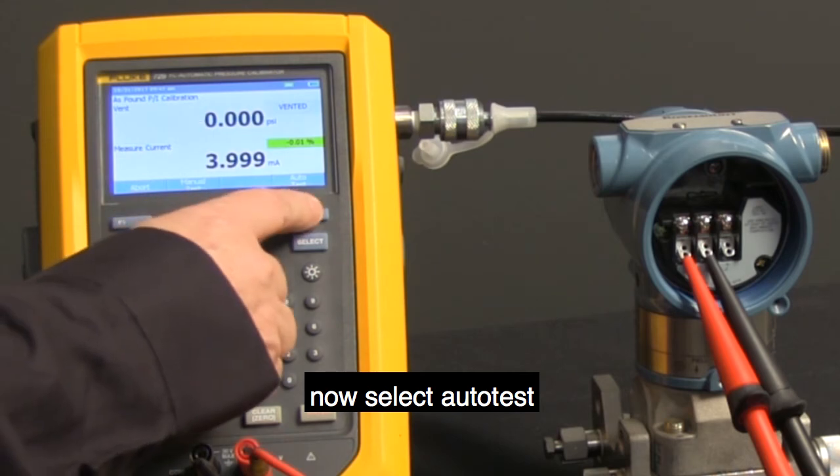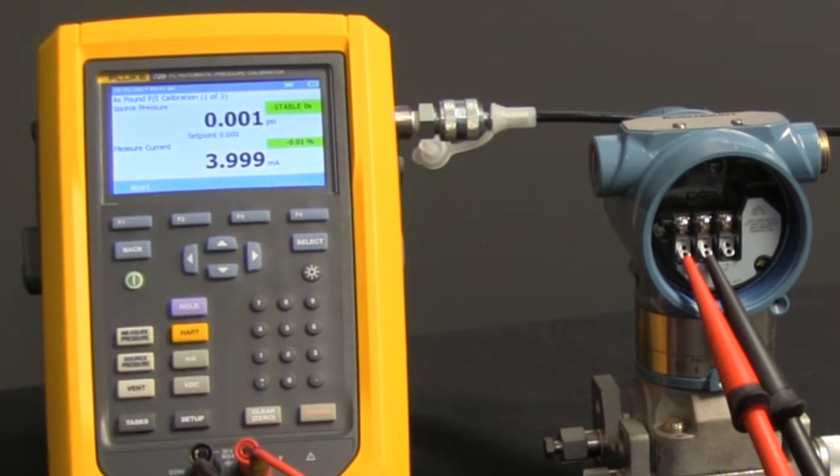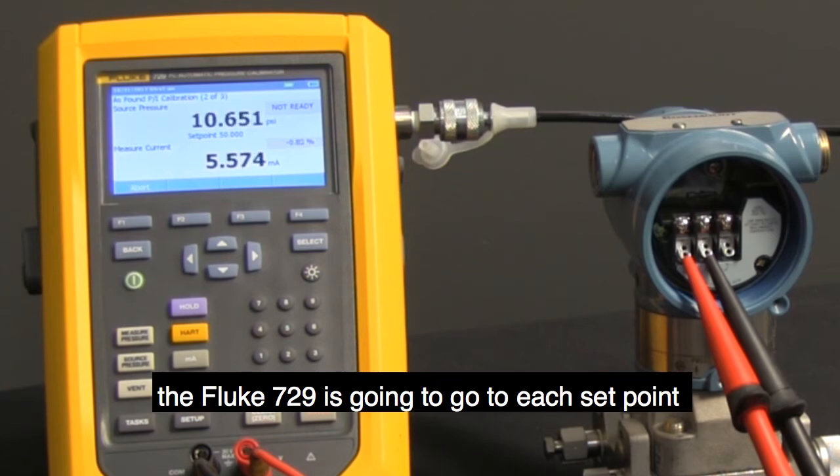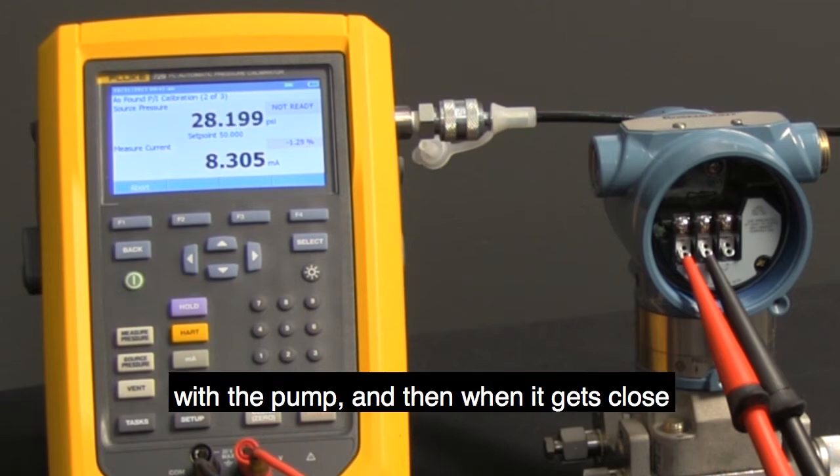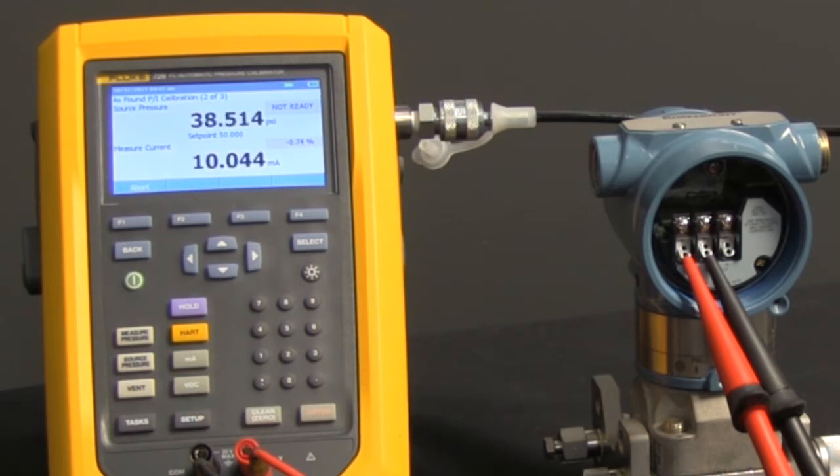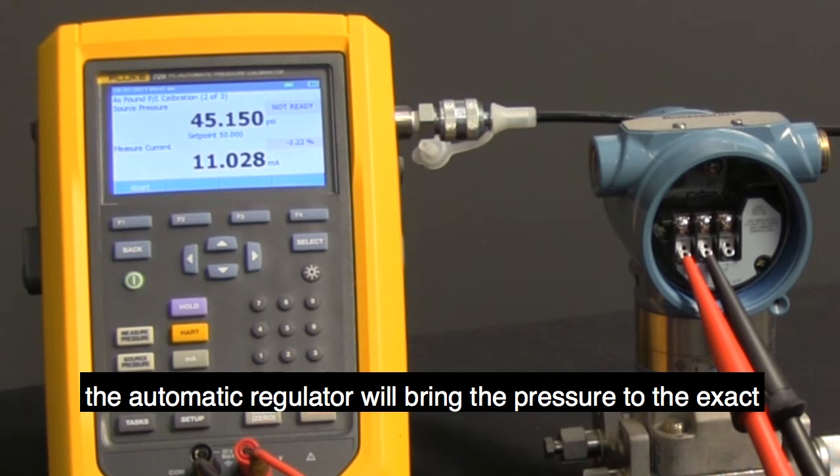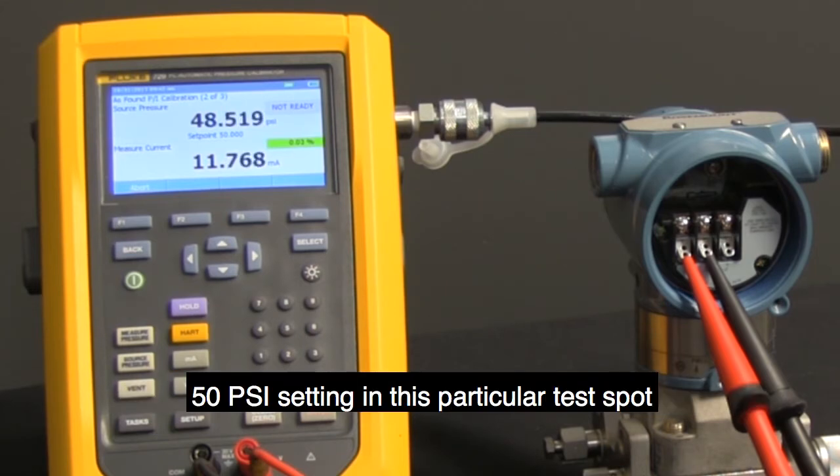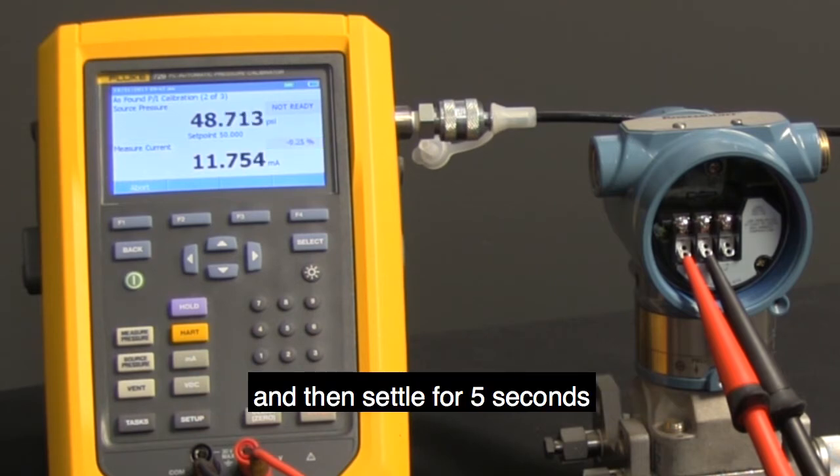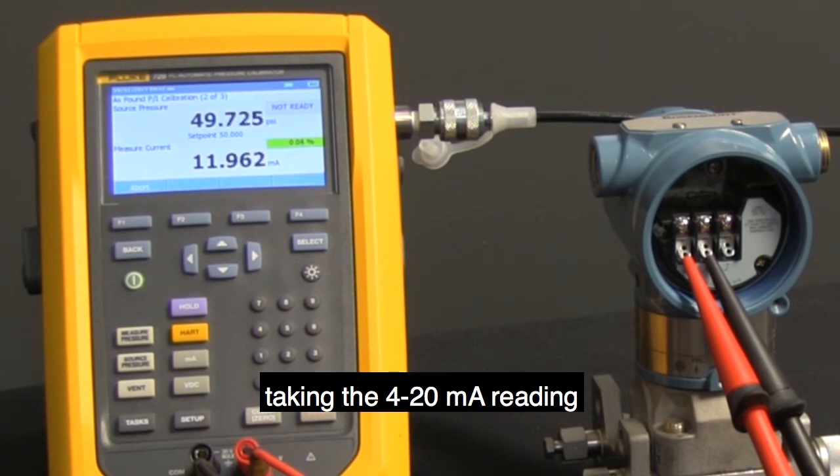Now, select Auto Test. The Fluke 729 is going to go to each set point with the pump, and then when it gets close, the automatic regulator will bring the pressure to the exact 50 PSI setting in this particular test spot, and then settle for 5 seconds, taking the 4 to 20 milliamp reading.